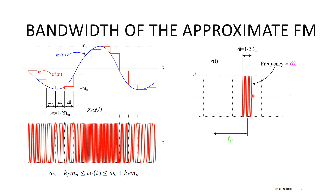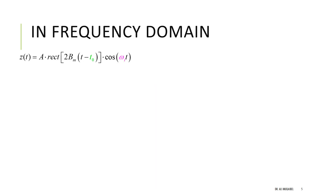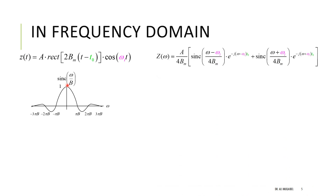One chunk is a carrier sinusoidal signal multiplied by a rect function, since it has a defined start and end point. The time domain expression is: amplitude A, with a delay t_0, rect width of 1/(2*B_m) scaled by 2*B_m, multiplied by a carrier sinusoid of instantaneous frequency omega_i. Using Fourier transform tables, a rect gives a sinc in the frequency domain, and multiplying by a cosine gives two shifted sinc functions with proper scaling.